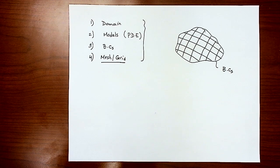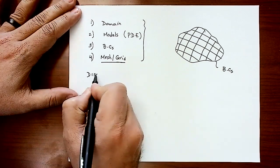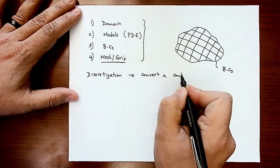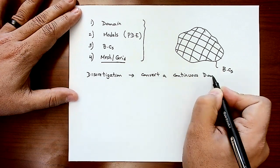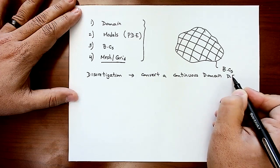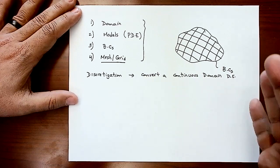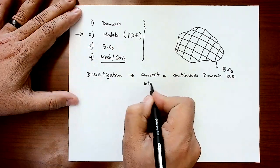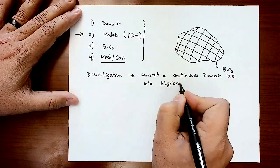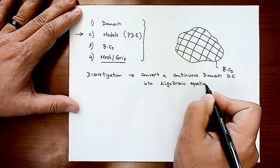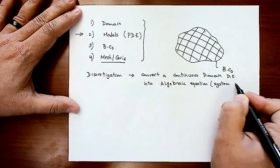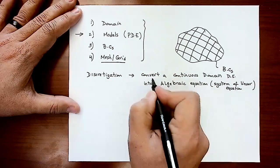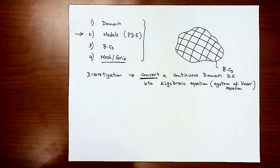So what does discretization actually do? Discretization converts a continuous domain differential equation — which gives you a continuous function over that domain — into algebraic equations. In most cases, it results in a system of linear equations, not always, but that's what we're going to do. Then you solve these equations numerically. So the conversion process is what we call discretization.